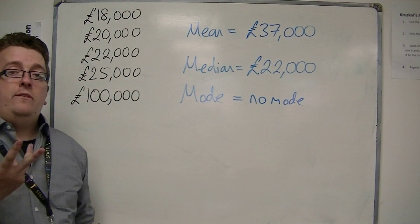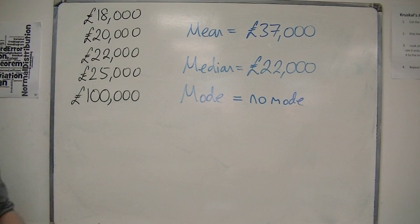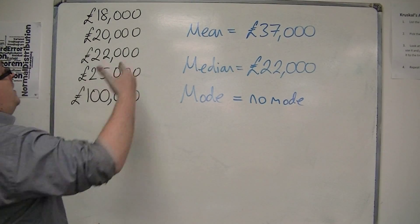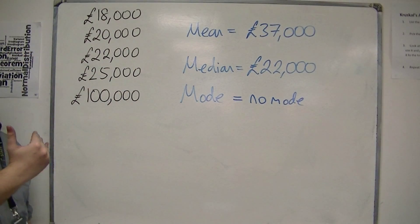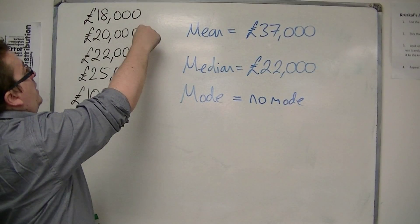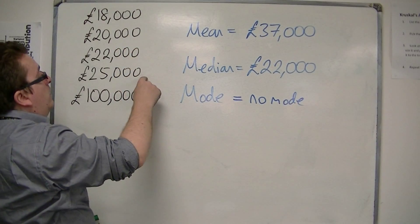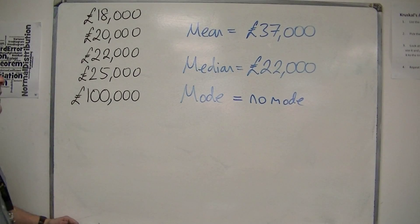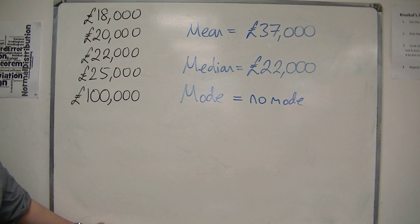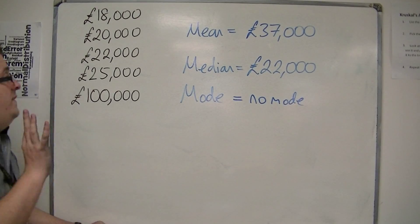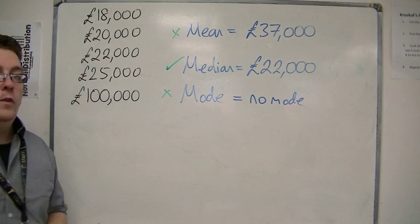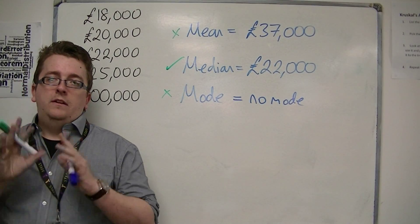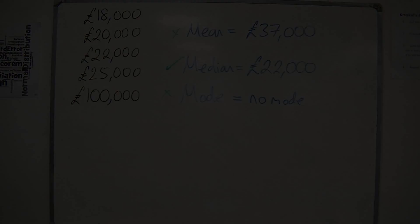The median seems like a very fair average to put in, because it is the middle ground — the middle person in the company — and the other amounts are reasonably distributed either side of it. You just have this £100,000 sticking out like a sore thumb. So in this case, it is the median, rather than the mean or the mode, that would probably be best as an average to use.